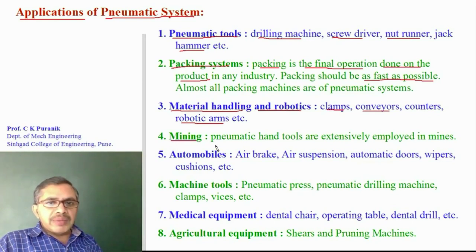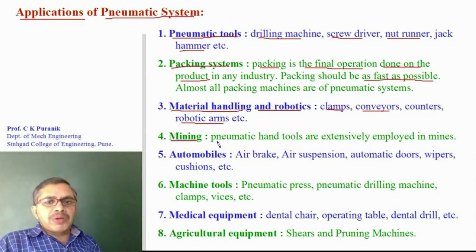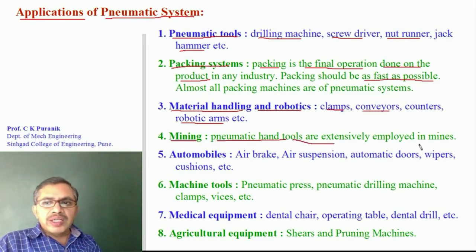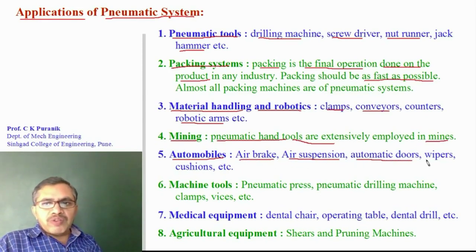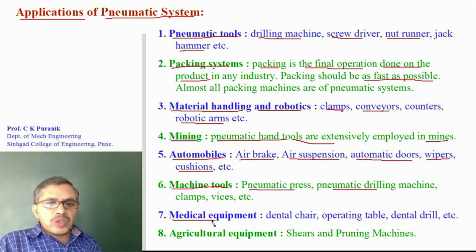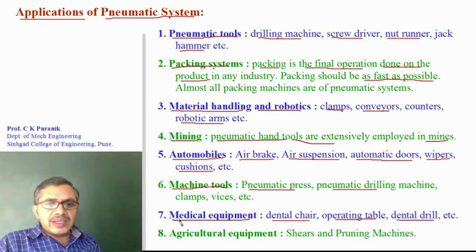Pneumatic systems are used in mining because they do not produce sparks, making them safe where explosives and explosive gases are present. Electrical systems produce sparks that result in fire hazards, so pneumatic hand tools such as drills, screwdrivers, and nut runners are extensively used in mines. Pneumatic systems are used in automobiles for air brakes, air suspension, automatic doors, wipers, and cushions. They are also used in machine tools such as pneumatic presses and drilling machines, as well as in medical equipment like dental chairs, dental operating tables, and dental drilling machines, and in agricultural equipment.